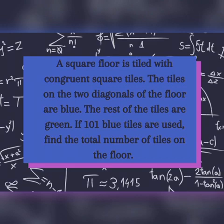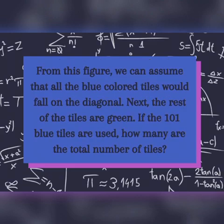In order for us to solve the problem, let's start by understanding it. It is stated that the square floor is tiled with congruent square tiles. From this figure, we can assume that all the blue colored tiles would fall on the diagonal.